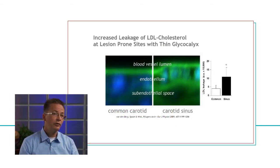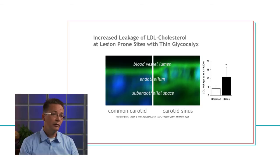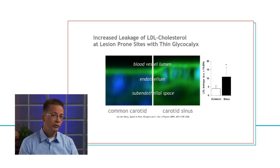Lesions develop at vascular sites where glycocalyx is less able to protect the vessel wall against cholesterol. Here you see what happens if we infuse cholesterol into the bloodstream. The green dye is high-fat cholesterol injected into the bloodstream; the top of the image shows the lumen and the bluish dots are the vessel wall. On the left, a thick glycocalyx protects the vessel wall — the cholesterol is confined to the luminal side and doesn't leak in. On the right, at a site with a thin glycocalyx, already within 15 minutes a lot of the green cholesterol molecules leak across the endothelial cells and start accumulating in the vessel wall. This is the first step in activating the inflammatory response that causes vessel wall disease and atherosclerosis.